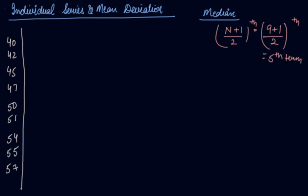So your 5th term is 1, 2, 3, 4, 5. So 50 is your median. You have calculated your median as 50.